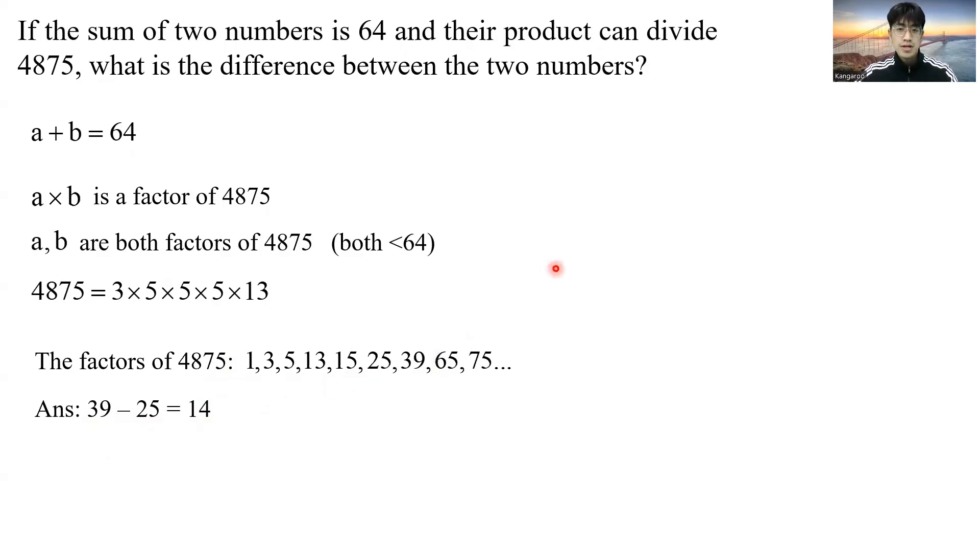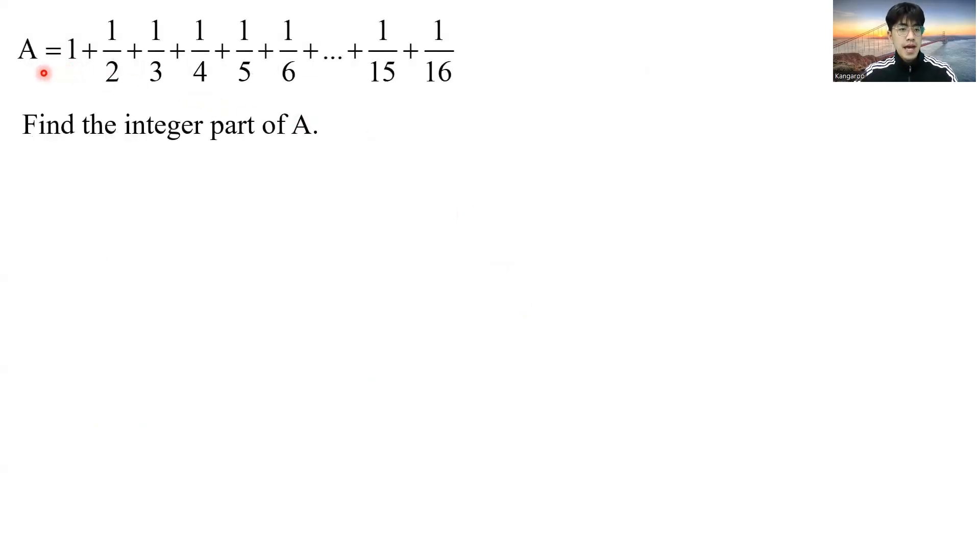Let us look at our final question of today. Now, given that a equals this, all these fractions add together, find the integer part of a. Now, remember from our previous lesson that in order to find the integer part of a, do I have to find out an exact value of a? Well, we don't need. We simply need to find a range for a. We need to find a smaller value than a and a bigger value than a so that we know a will be somewhere in between. Now, if you want to learn more about this, make sure to check out our previous video on this lesson.